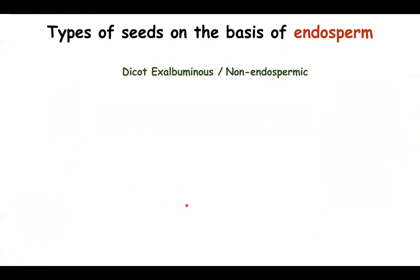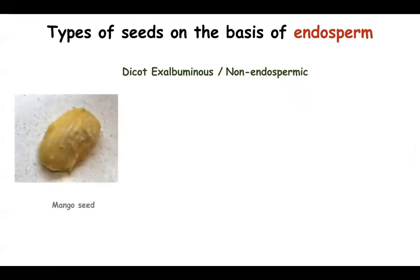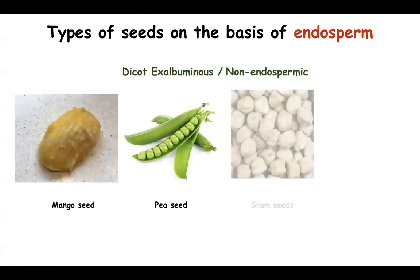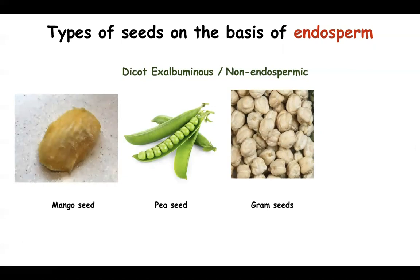When we have dicot exalbuminous seeds, there are seeds with two cotyledons where the cotyledon stores food, as in the case of the mango seed — two cotyledons, cotyledon stores food, no endosperm. In case of pea, again the cotyledon stores food, two cotyledons, no endosperm. Gram seeds also have two cotyledons, the cotyledon stores food, and the endosperm is absent.